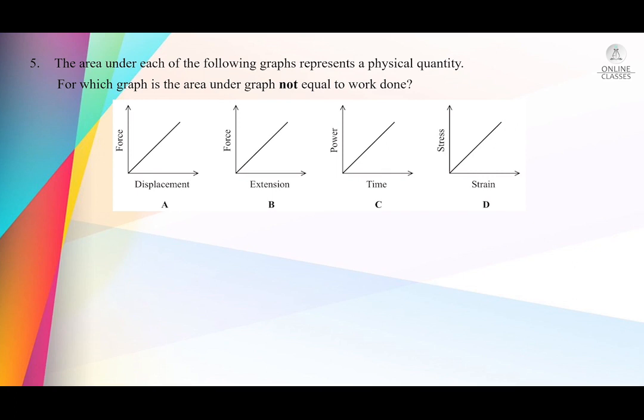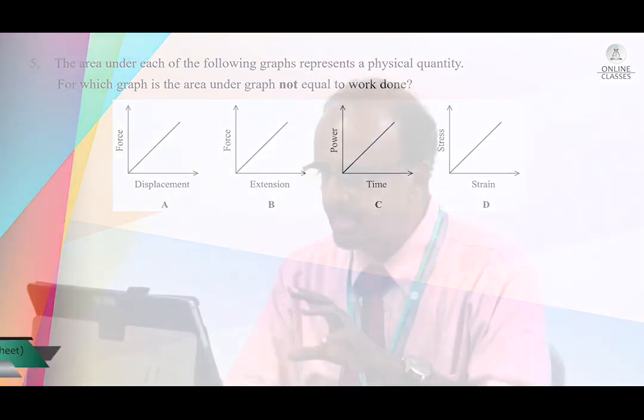So graphs A, B, and C all give work done. But for graph D, the area under a stress-strain graph — half stress times strain — gives energy density. We learned this in our theory classes.